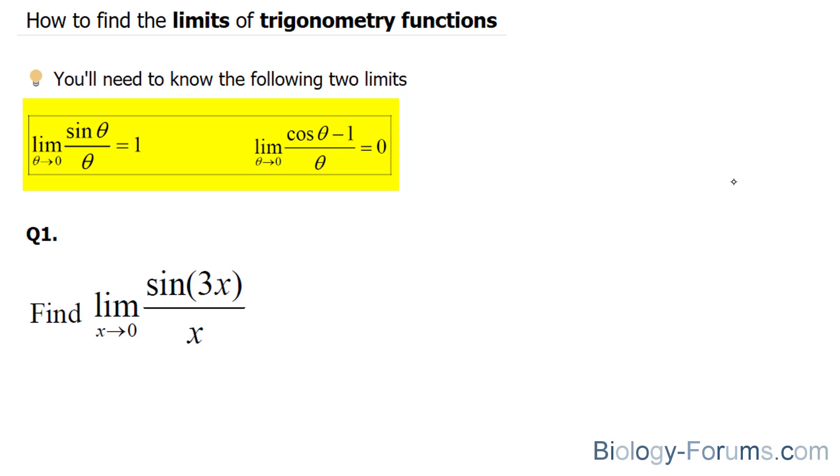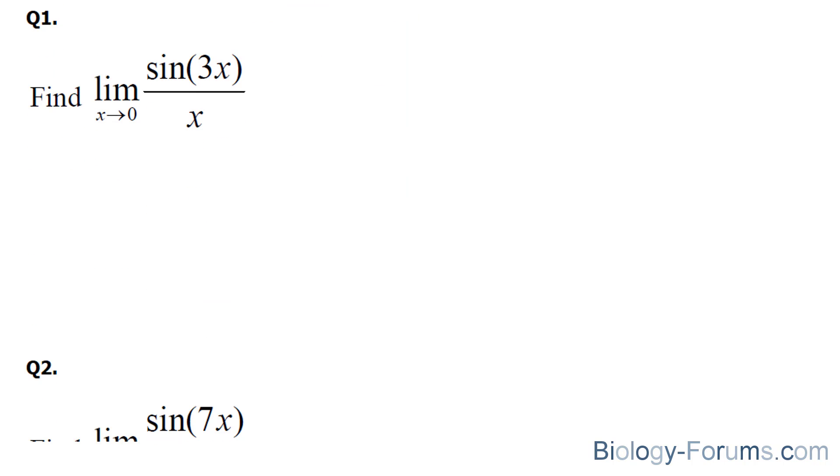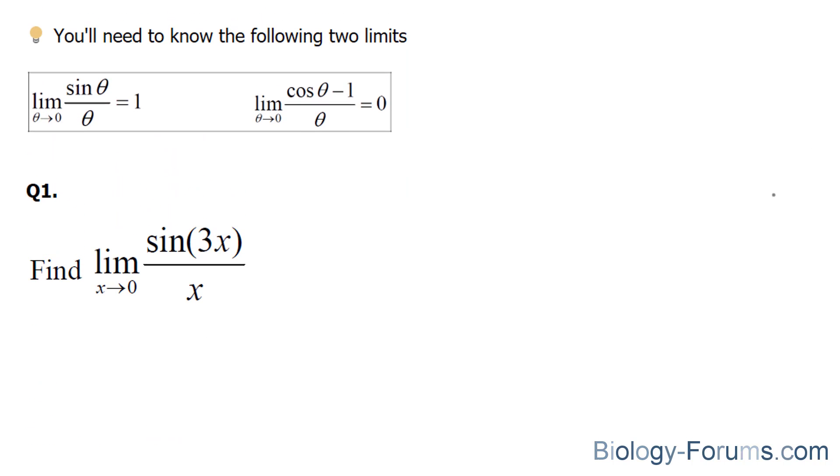We'll start with question number one. The trick to finding the limits of trigonometric functions, namely sine and cosine, is that the coefficient in front of the x needs to be the same. Notice that the coefficient here is 3, but the coefficient here is 1. If we can somehow match them, the limit goes to 1.